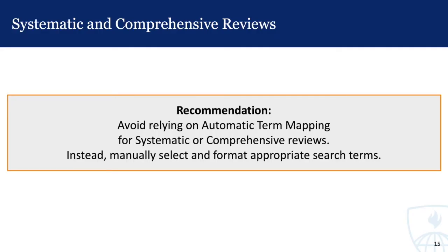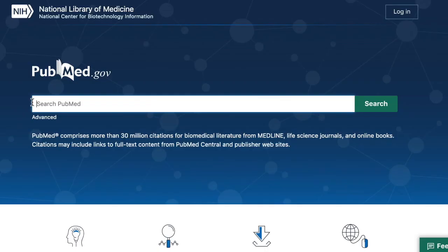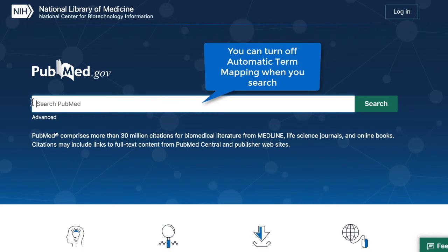The final point about automatic term mapping is that this feature can cause problems when you are conducting a systematic or comprehensive literature review. For these types of reviews, we recommend that you take the time to manually select and format the appropriate search terms. This removes any potential errors caused by automatic term mapping and provides a stable search that others can easily reproduce. If you decide that automatic term mapping is not a feature you want to use, you can turn it off — in fact, you may be turning it off without even realizing it.